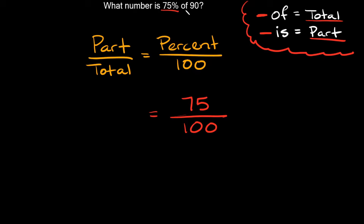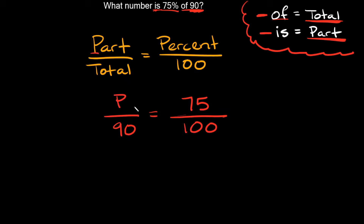Here you can see it says 'of 90' — whenever you see the word 'of,' that means the total. So 90 is the total and goes on the bottom. On the top we don't know what number this is, because it says 'what number is.' The word 'is' is our keyword for the part, but we don't know the part. So since we're trying to solve for the part, I'll abbreviate that with a P.